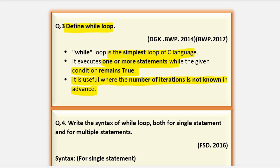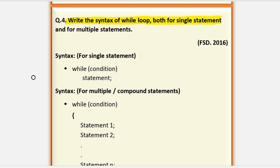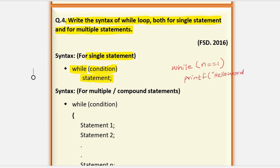Write the syntax of while loop for both single and multiple statements. For a single statement, first the keyword 'while' is written, and the condition is written in parentheses. Then the single statement follows. For example, a variable is declared and initialized with 1. When the value is 1, this loop prints Hello World.